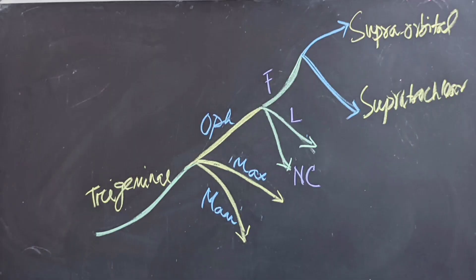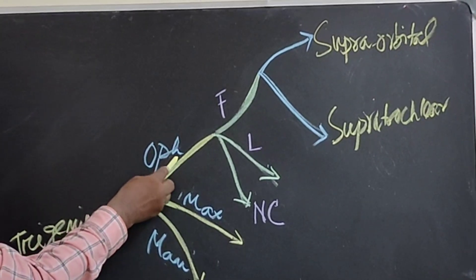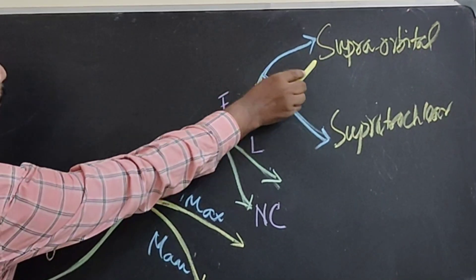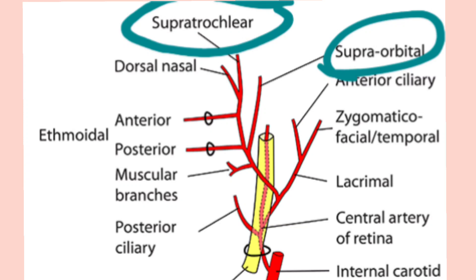Remember that the supratrochlear and supraorbital nerves are branches of the frontal division of the ophthalmic nerve. The ophthalmic nerve is one of the three branches of the trigeminal nerve — ophthalmic, maxillary, and mandibular. The ophthalmic division divides into frontal, lacrimal, and nasociliary. The frontal division divides into supratrochlear and supraorbital nerves. The supratrochlear and supraorbital vessels are branches from the ophthalmic artery, which is a branch of the internal carotid artery.